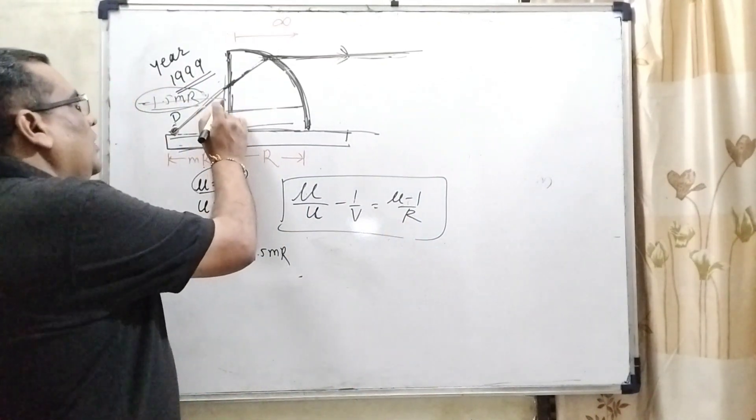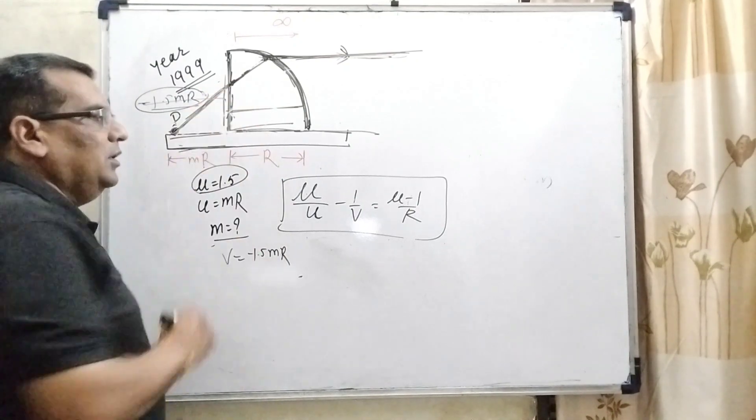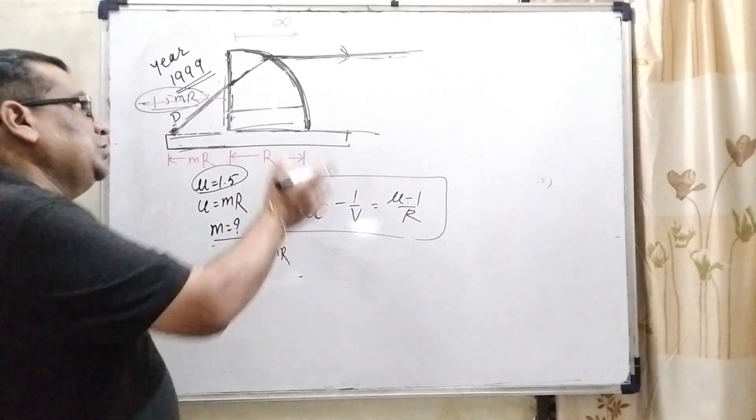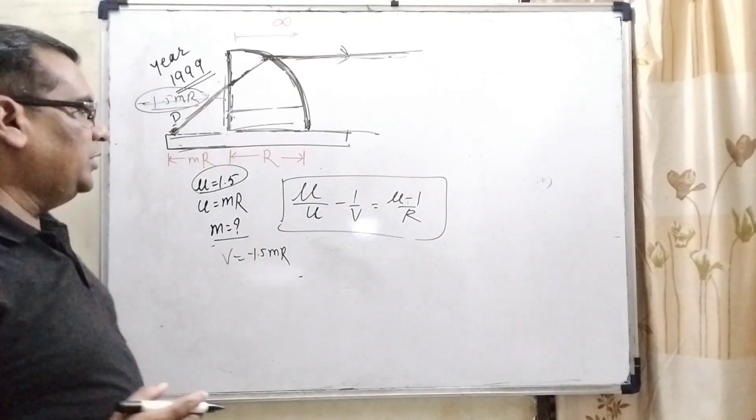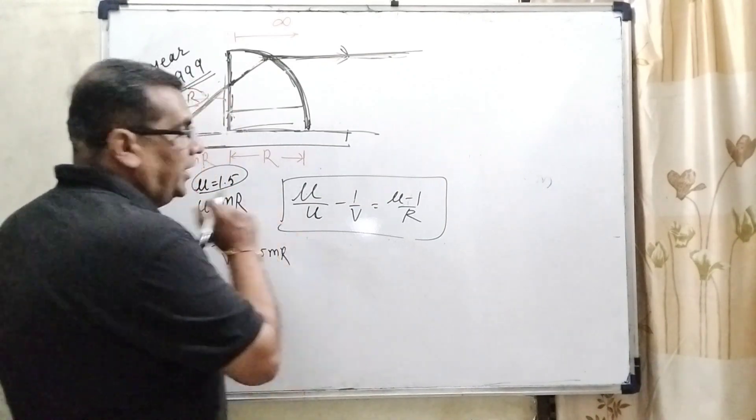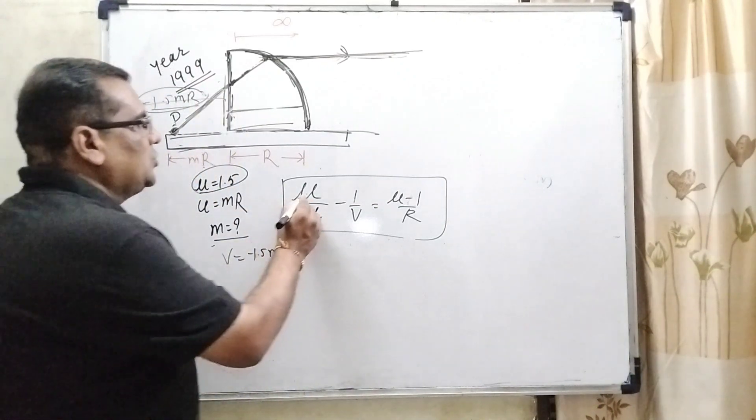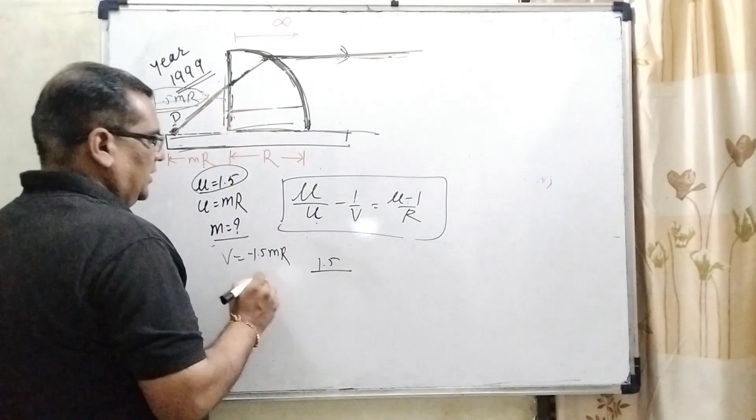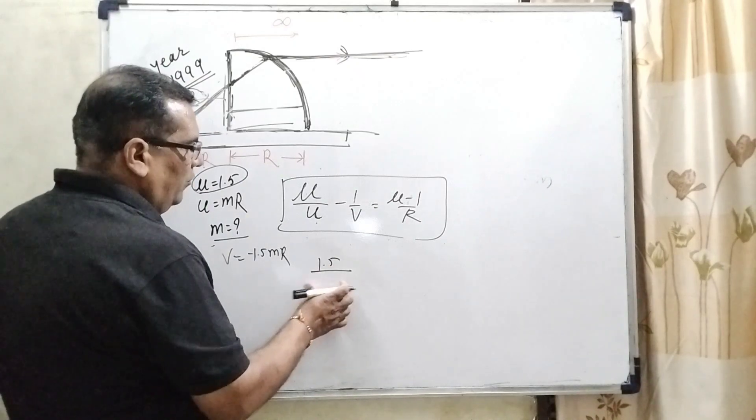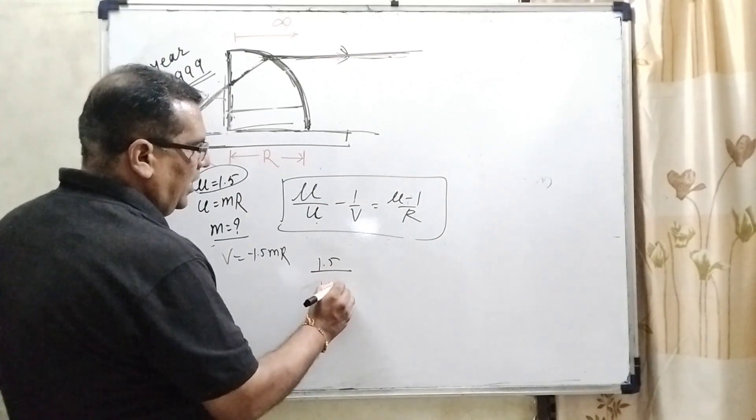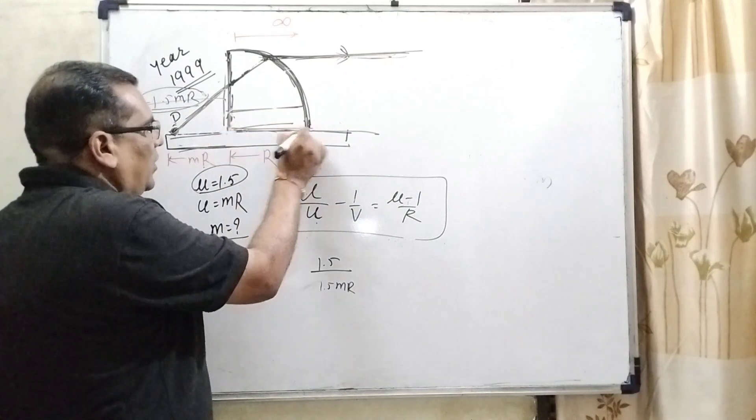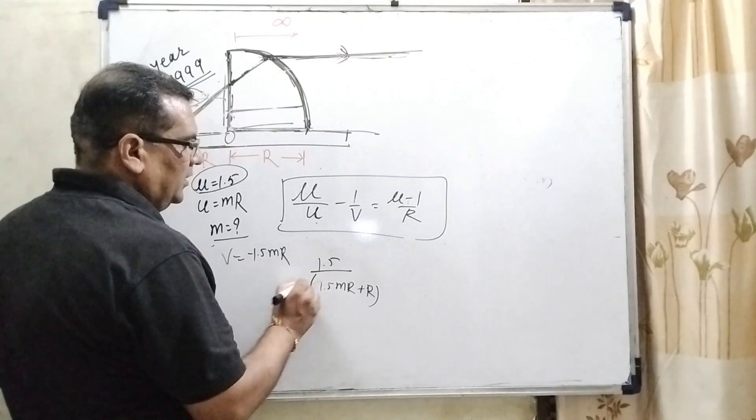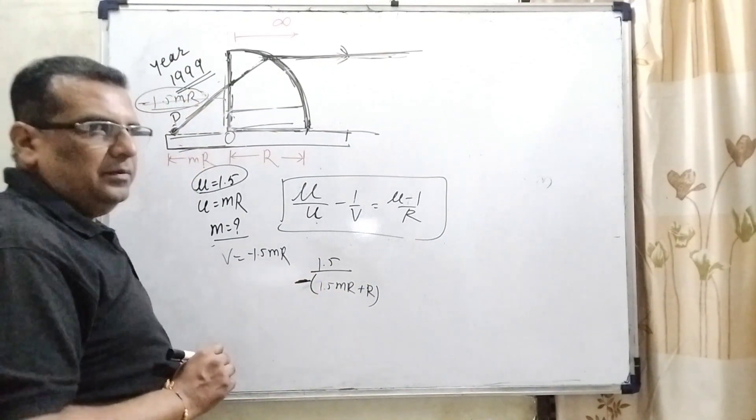Here the object image is working as an object, means we can say that is virtual, but its position to the left side. So therefore we are using sign convention rule negative. So what is mu? That is 1.5 and total u, this distance is image distance that is 1.5 mR. And this distance from O to this curved surface that is r, and sign convention rule we are using minus.